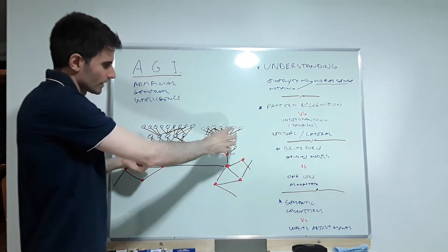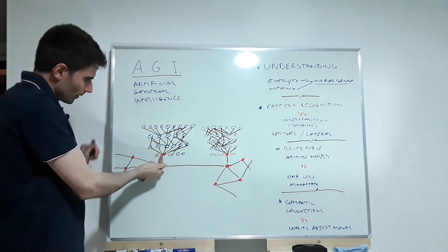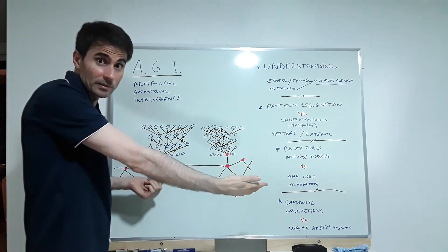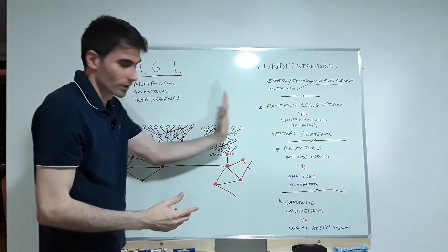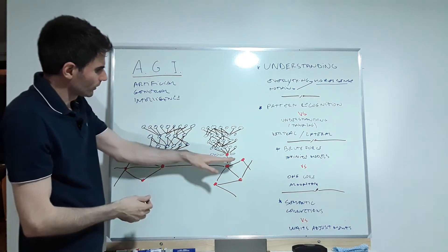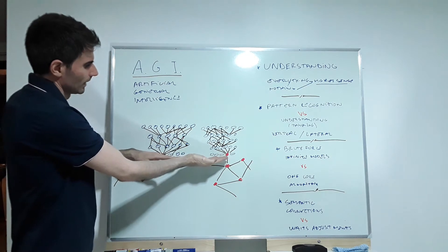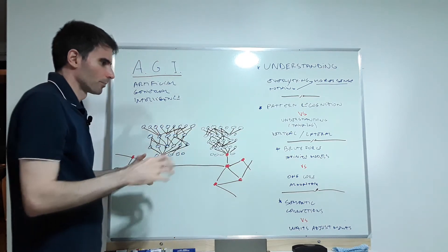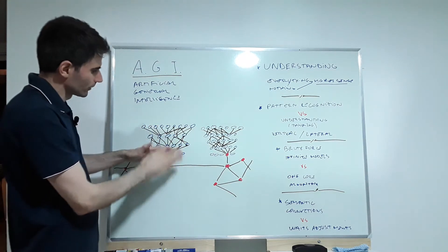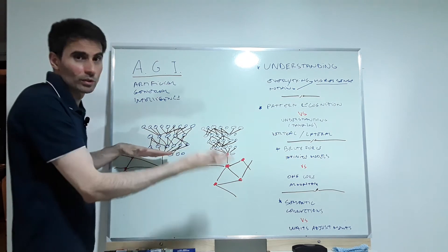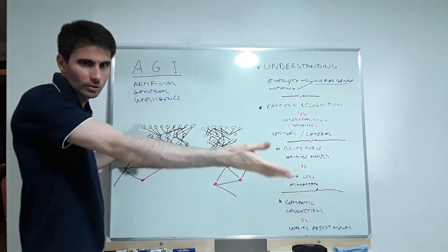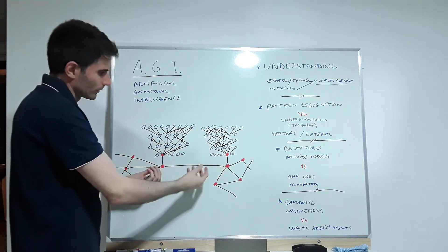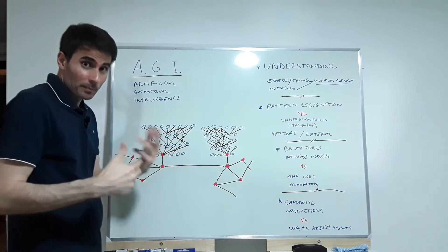Suppose there's another neural net recognizing something else. The concept recognized here needs to be interconnected with other concepts recognized by other neural nets. But today, as far as I'm aware, neural nets stop here — and from there they only produce an action, like 'move left,' 'approach the cat,' or 'show the word cat to the user.' I don't think we should stop there.